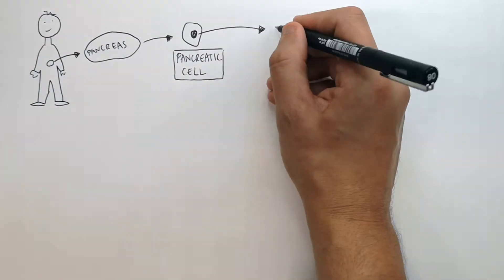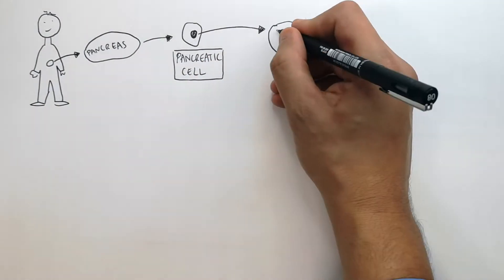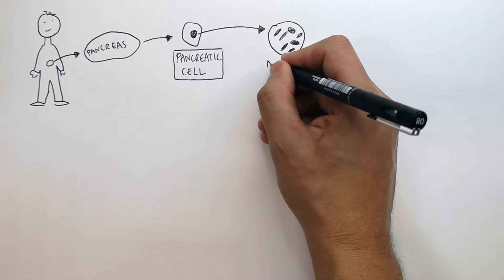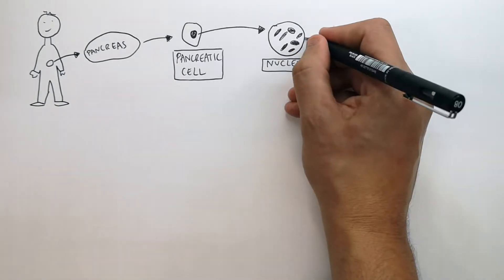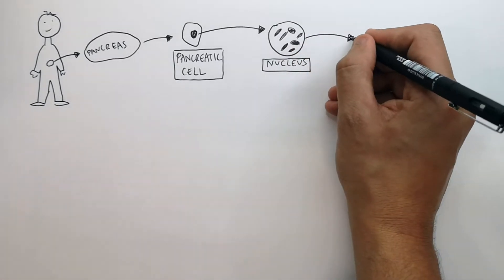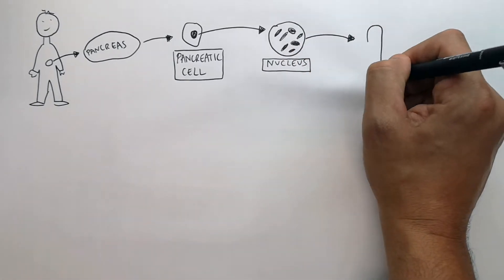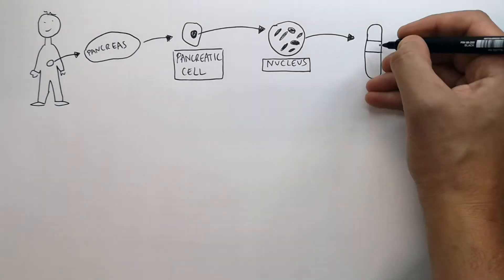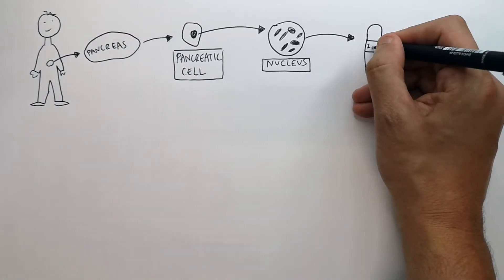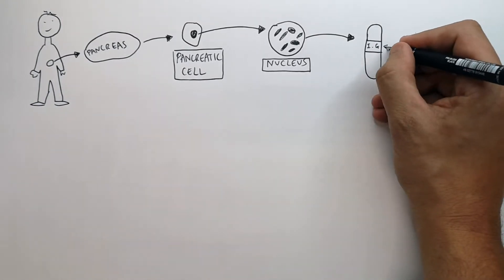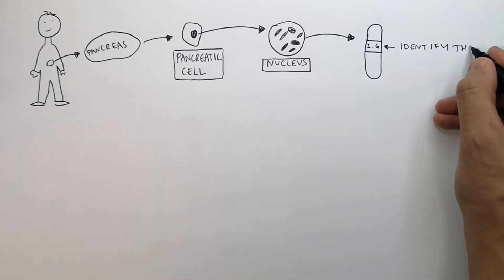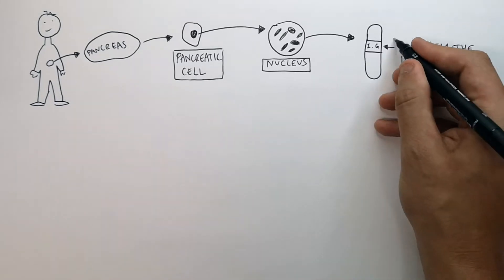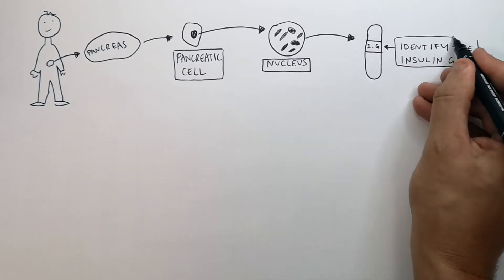We then identify the chromosomes inside the nucleus, and then we identify our gene. This here is the insulin gene — the insulin gene that we want to remove.